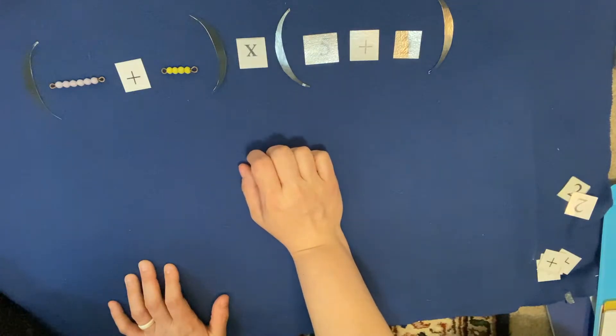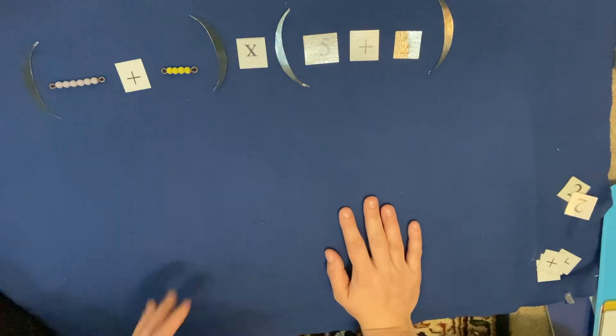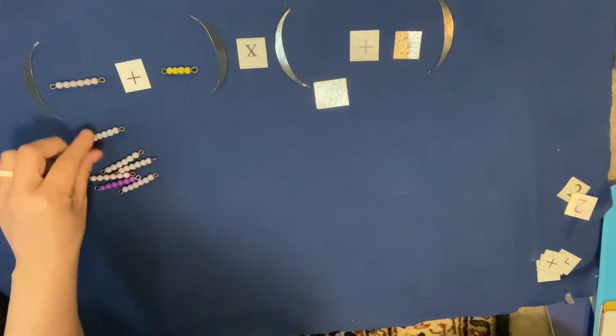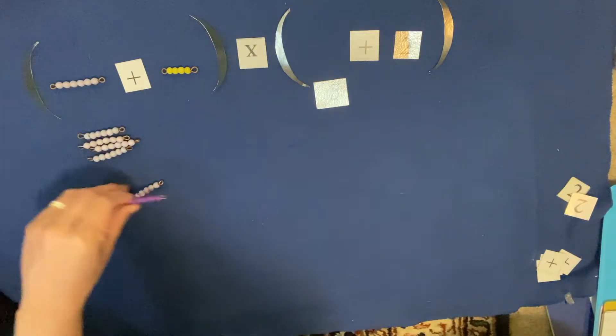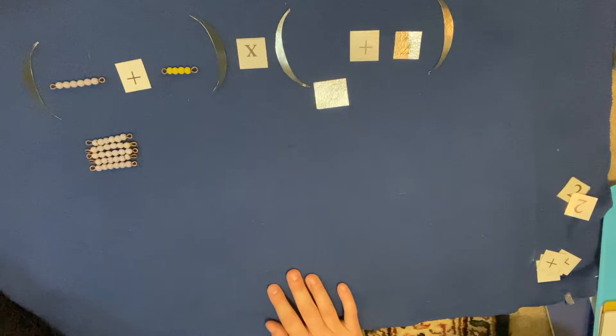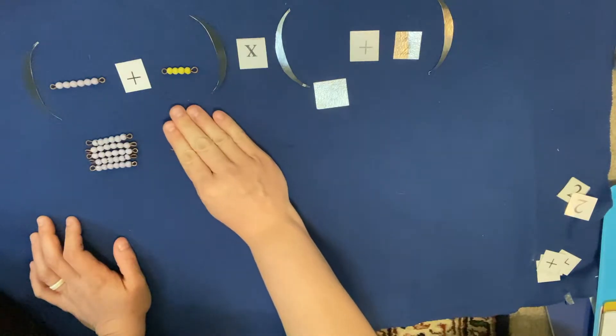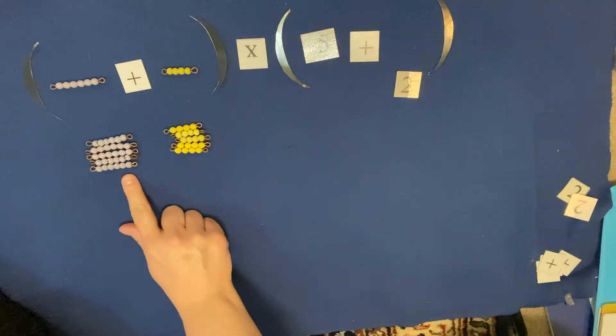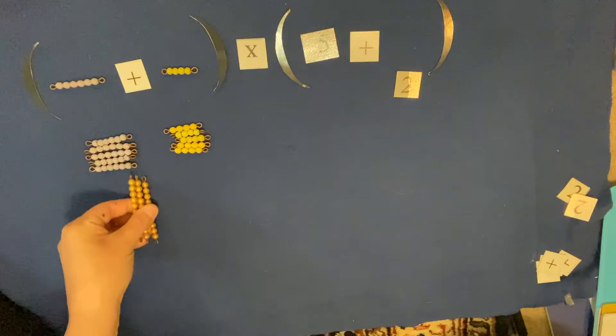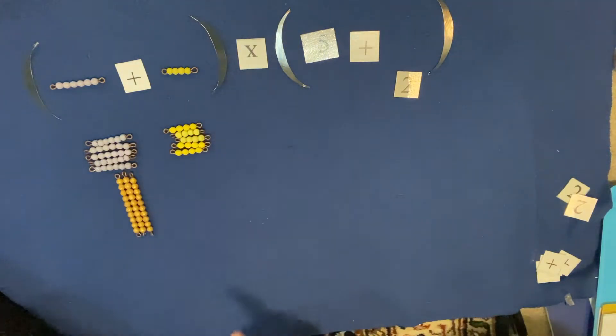So as we can see here, I went ahead and put some operation signs inside my parentheses. So let us begin the work. We're gonna multiply everything by five first. So six times five, and four times five. Very cool. So let's go ahead and find our answer for this. What is six times five? Six, twelve, eighteen, twenty-four, thirty.